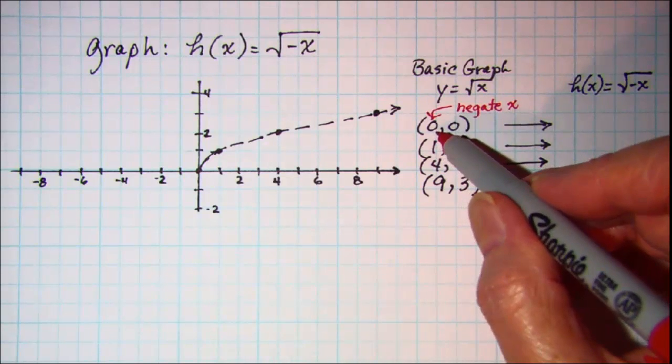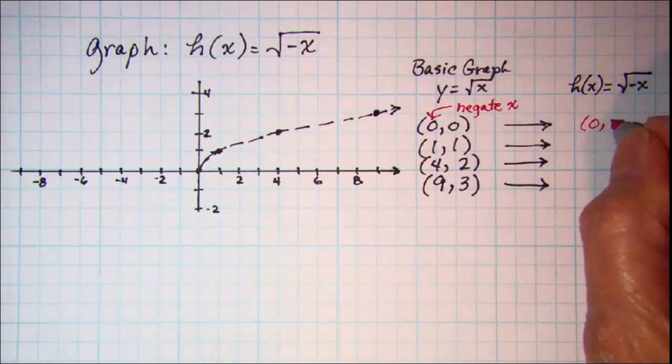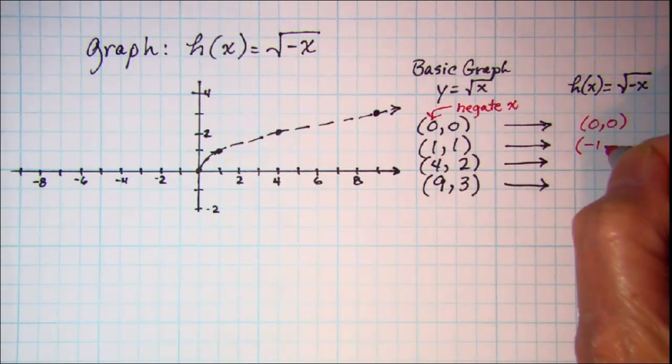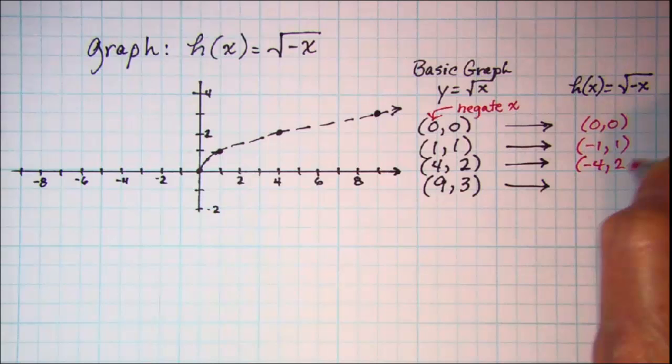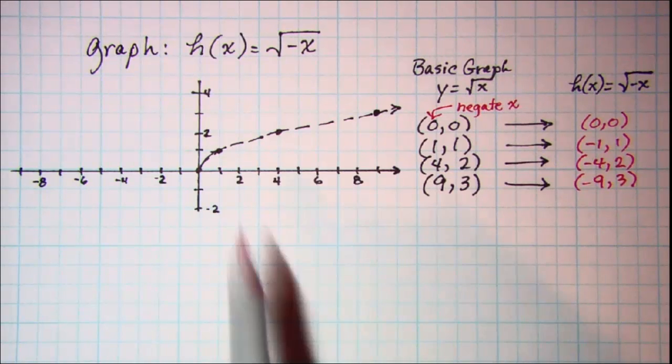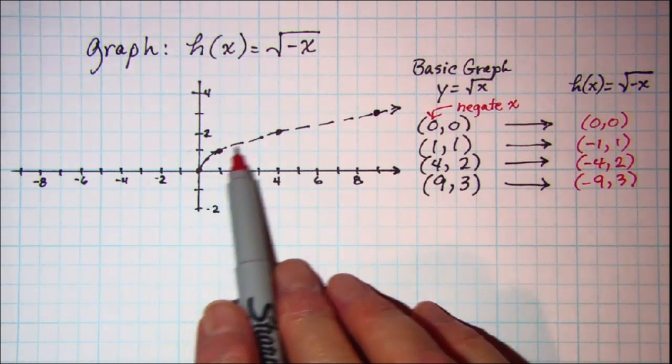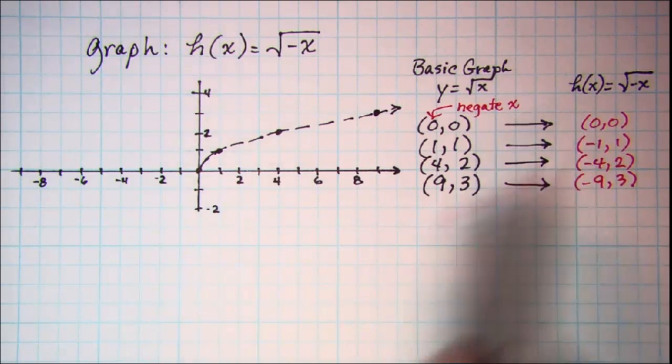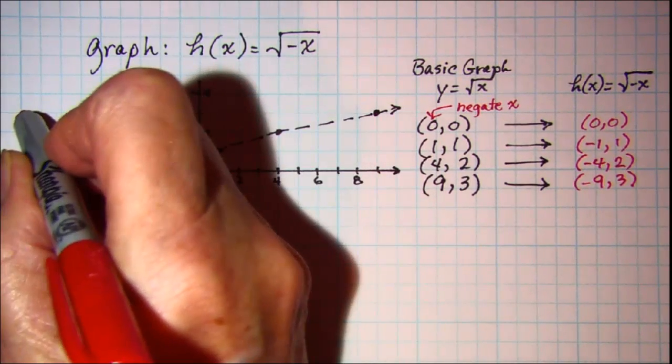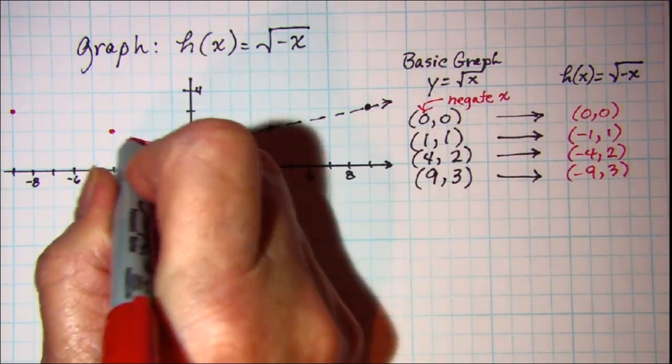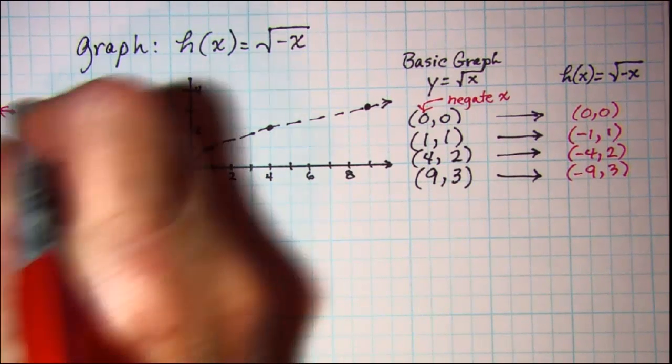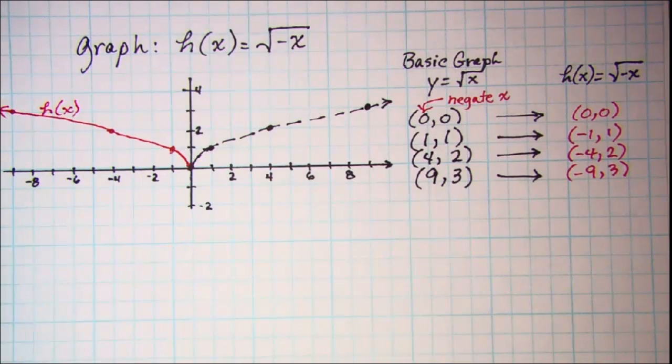Zero doesn't have a negative so that point remains on the h graph. Negating x here we have negative 1, 1, negative 4, 2, and negative 9, 3. So our basic graph y equals the square root of x we're showing here. For our h graph we're going to have these points. Our h graph is shown in red.